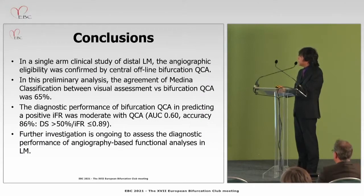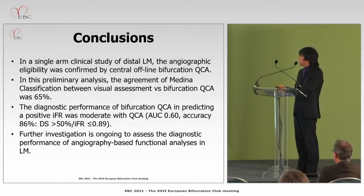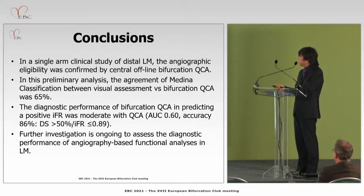In conclusion, in a single-arm clinical study of distal left main disease, angiographic eligibility was confirmed by central offline bifurcation QCA. In this preliminary analysis, agreement of Medina classification between visual assessment versus bifurcation QCA was only 65%, highlighting the importance of QCA for clinical treatment decisions. The diagnostic performance of bifurcation QCA in predicting a positive IFR was moderate. Further investigation is ongoing to assess the diagnostic performance of angiography-based functional analysis in left main disease.